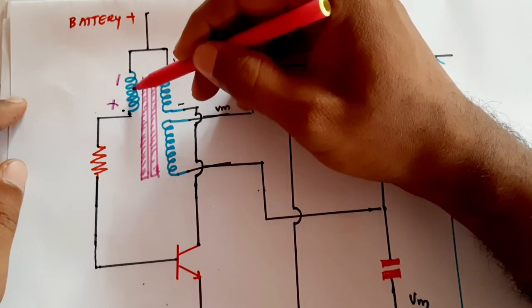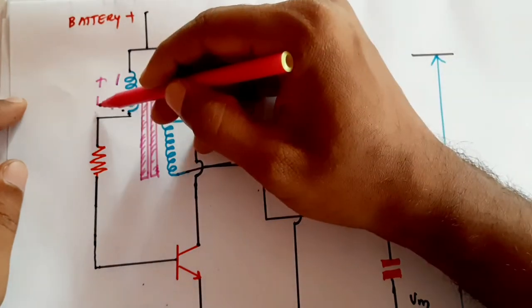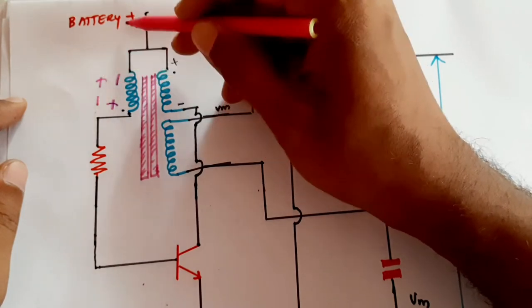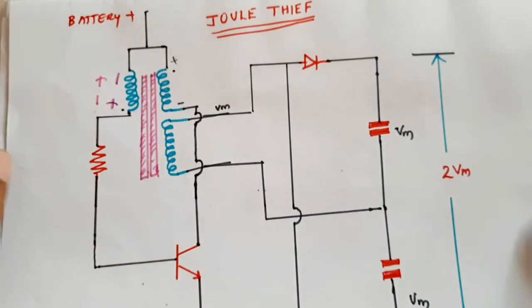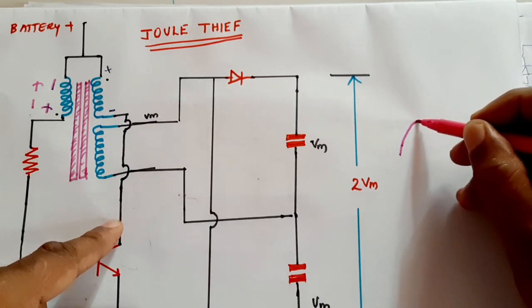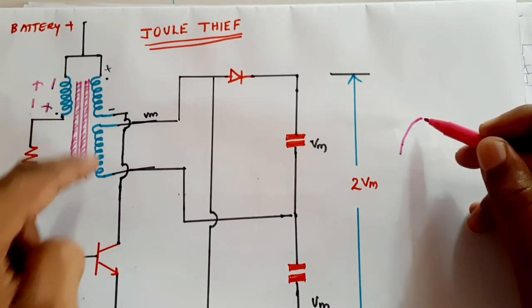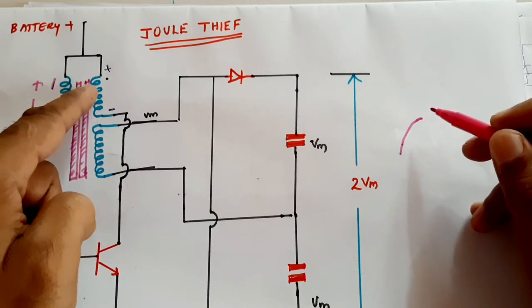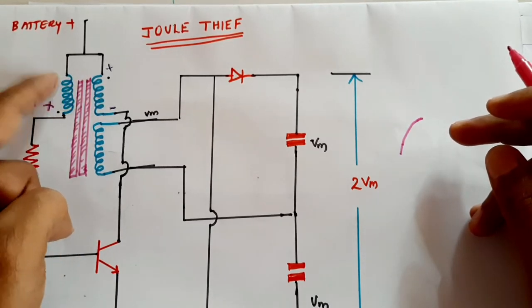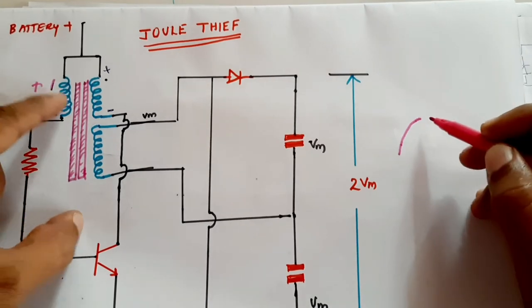The inductor wants to keep the current constant, so its polarity becomes reversed — this end becomes minus and this becomes plus. Now it is opposing the battery voltage, so the current will begin to reduce. As the current decreases and there is no change in flux, this point does not have any voltage, so in order to maintain its voltage it reverses its polarity and opposes the battery voltage.